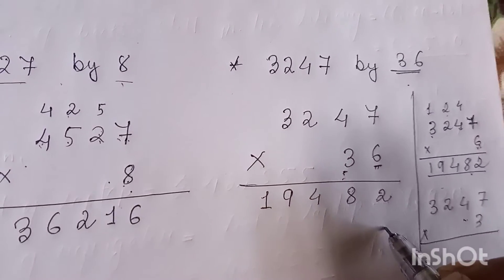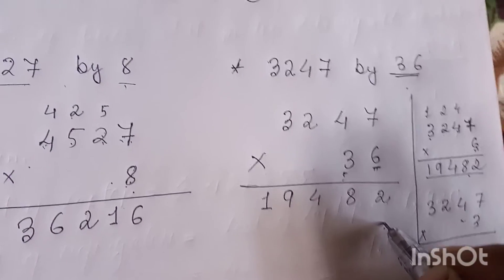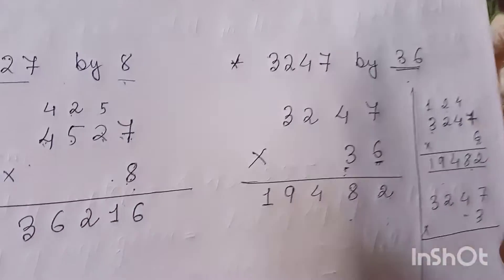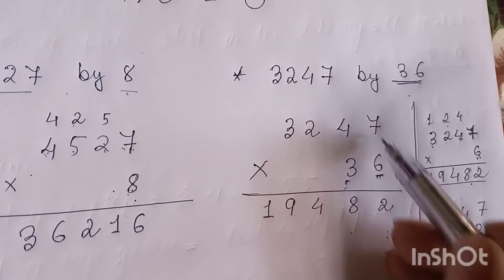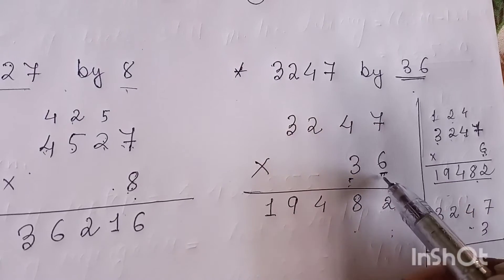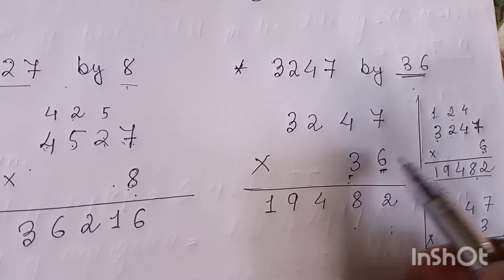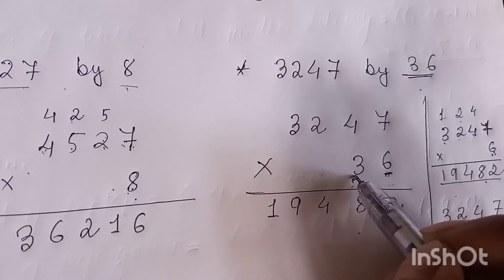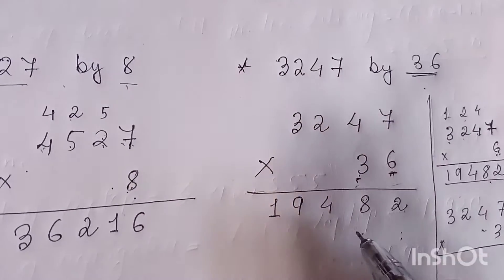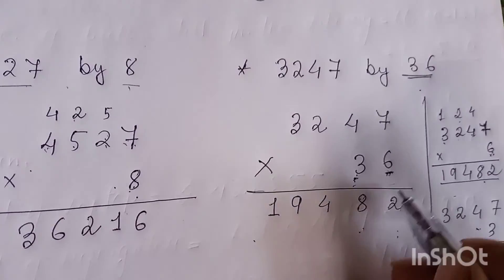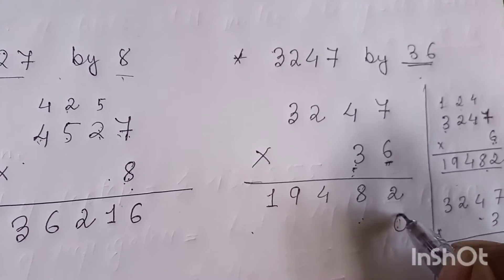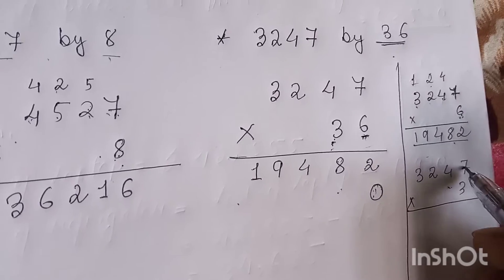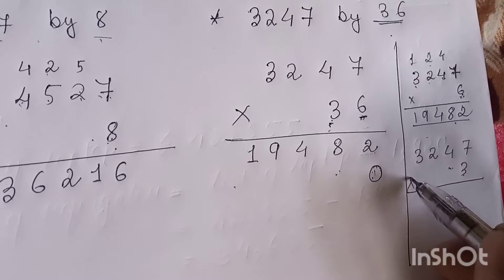Always remember: since three is in the tens place, we leave the one's place empty and start the answer from the tens place. Whenever we multiply a digit in the tens place, we leave the one's place empty and put zero there.